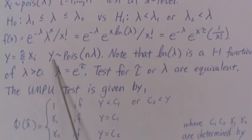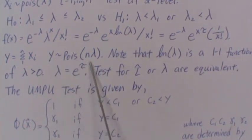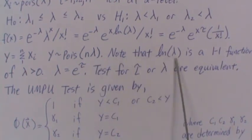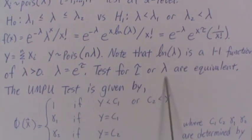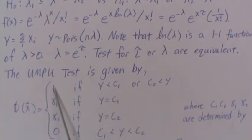We'll call it Y, and we know that sum of independent Poissons is also a Poisson, so Y is distributed with Poisson with parameter n lambda. Now note that natural log of lambda is a one-to-one function of lambda, and you can even back solve for lambda in terms of tau, so lambda is equal to e to the tau, and so they're one-to-one functions of each other. Tests for tau or lambda are equivalent.